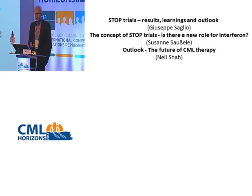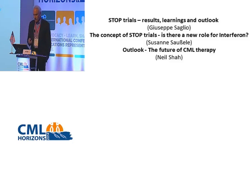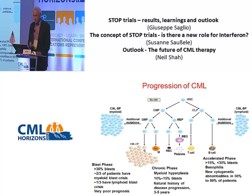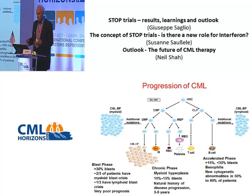We believe that the BCR-ABL mutation actually arises in the hematopoietic stem cell or in a very primitive cell, and this preferentially drives the differentiation of such affected cells towards the myeloid lineage. This is why we consider CML to be a myeloproliferative neoplasm where we have typically too many granulocytes produced.